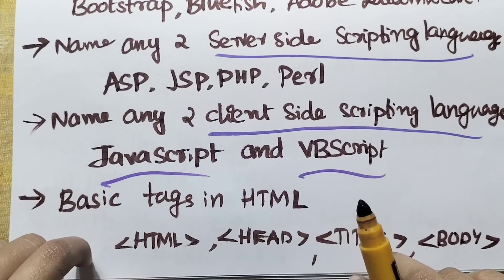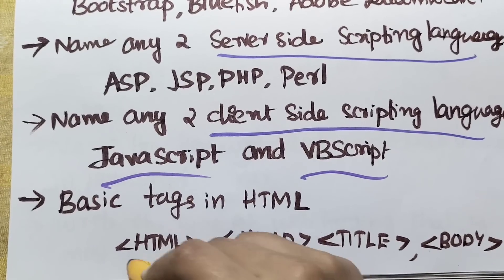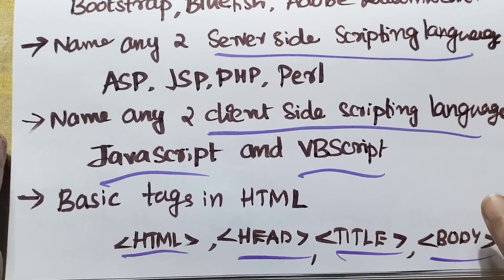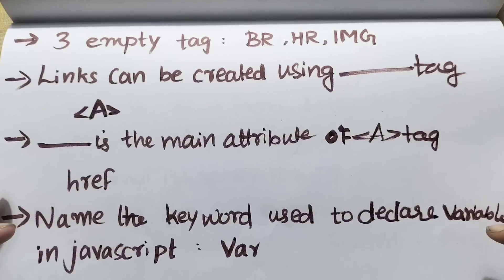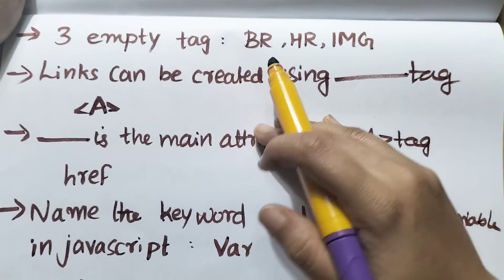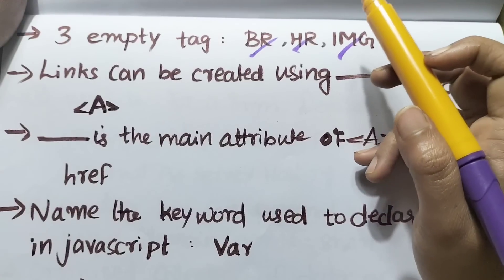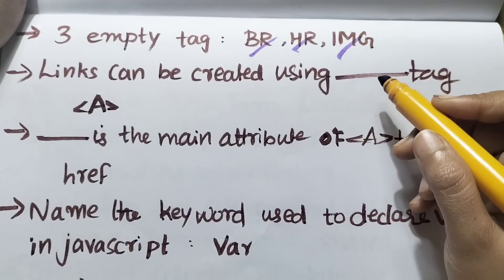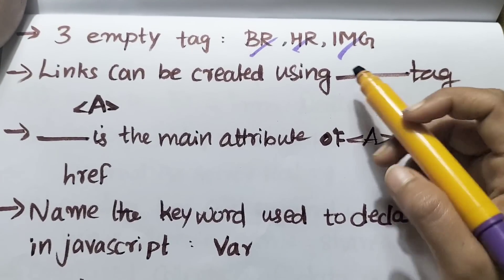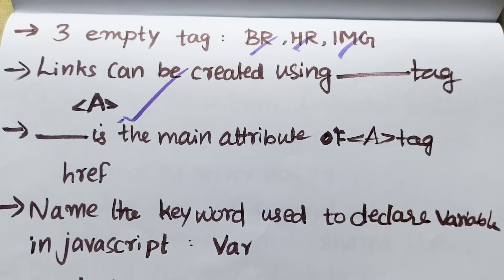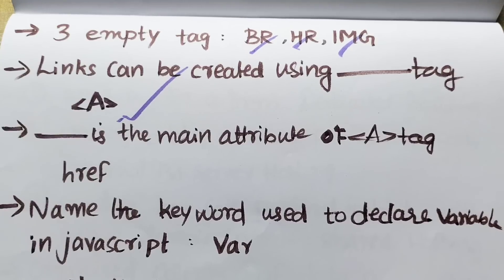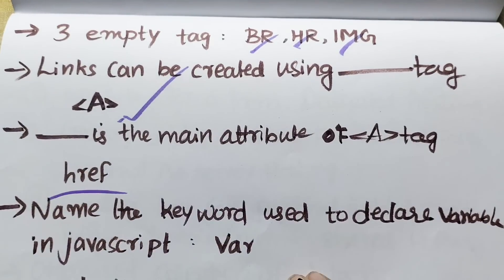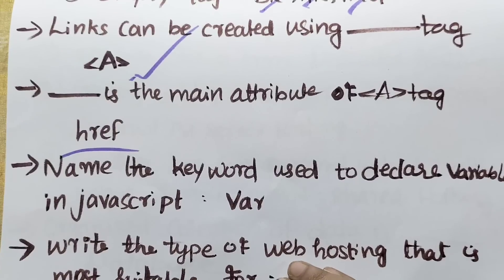Basic tags in HTML include: the HTML tag, head tag, title tag, body tag, and paragraph tag. The main attribute of an anchor tag used to create a link is href.